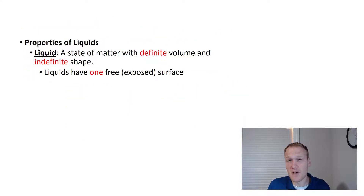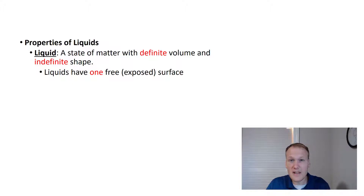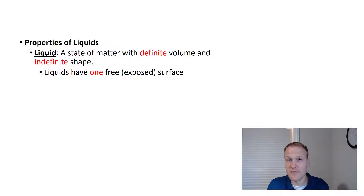Let's take a look at some properties of liquids. A liquid is defined as something that has a definite volume but does not have a definite shape. The intermolecular forces of a liquid are somewhere in that medium range where the particles have the ability to slide past one another, allowing them to flow. A liquid will also always have one free or exposed surface.